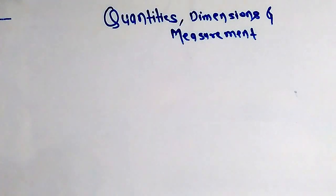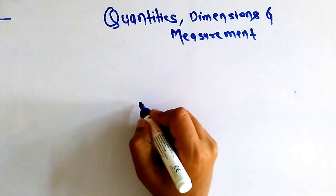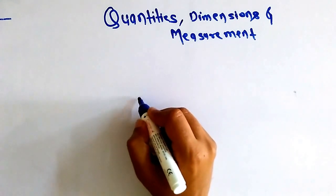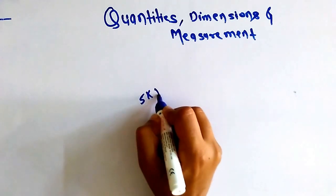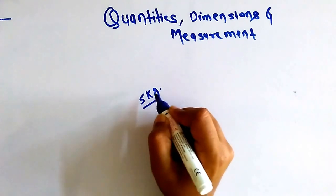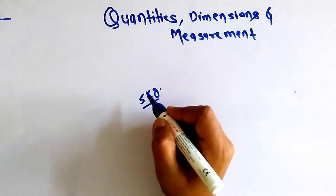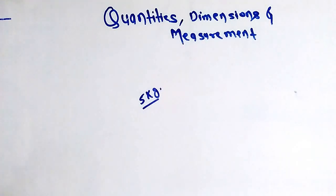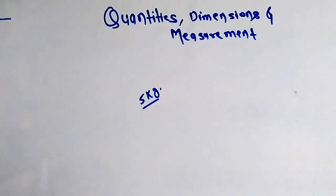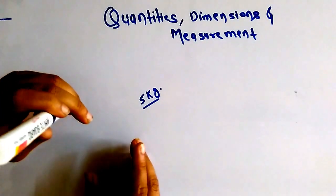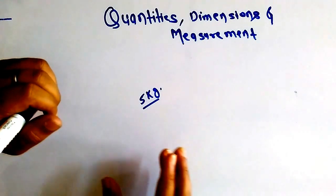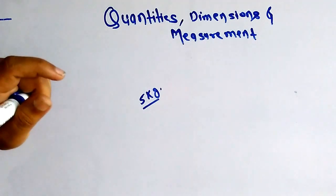Suppose you are going to a cloth shop and saying to the shopkeeper, 'Give me a cloth having weight equals 5 kg.' This means we cannot express a fundamental quantity in terms of another fundamental quantity.